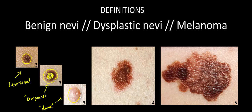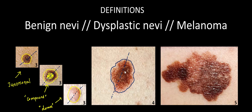Jumping to the dysplastic nevus in the center, notice that this slightly larger lesion has fairly well-demarcated borders with some slight irregularity — more so than we saw with the benign nevi — and also a degree of asymmetry. If you were to draw a line, this lesion isn't as symmetric as the benign nevi. Some could also argue that the color variation is a little bit more, with areas of darker and lighter pigmentation, more so than we saw with the benign lesions.